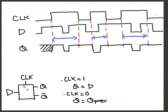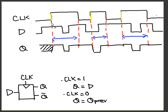Now for a D flip-flop, it's going to be the same thing except there's going to be a triangle sign, which indicates that this is a D flip-flop. We use a D flip-flop because sometimes we don't want the value of Q to change during an interval — we want it to hold for the entire clock cycle. For a D flip-flop, we look at where the clock changes from 0 to 1. From here to here, here to here, and here to here — clock changes from 0 to 1.